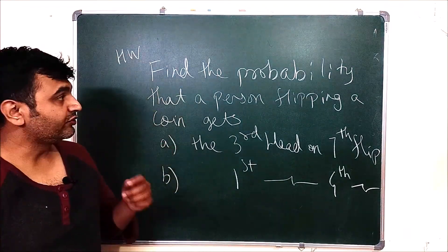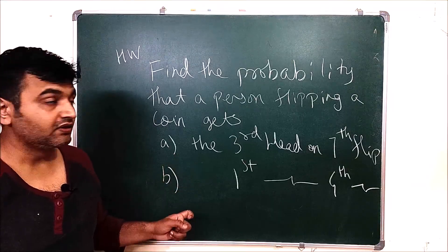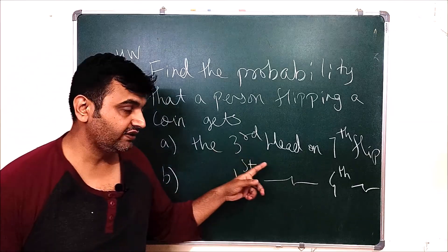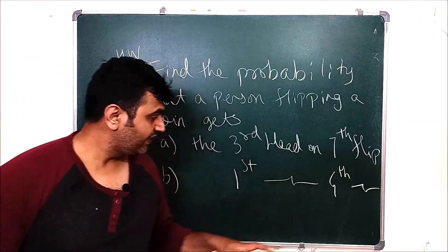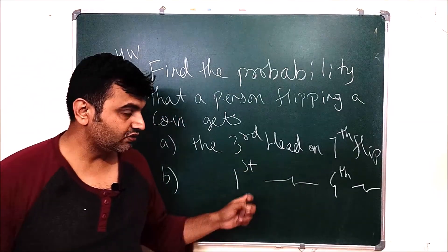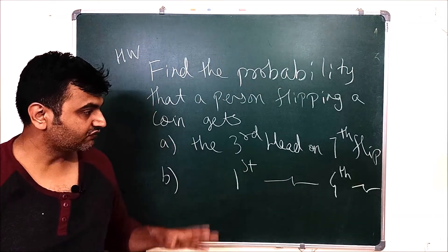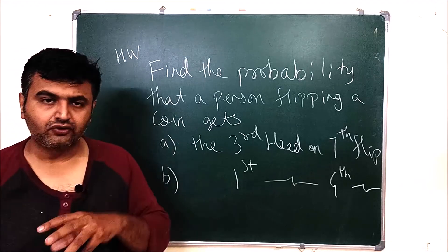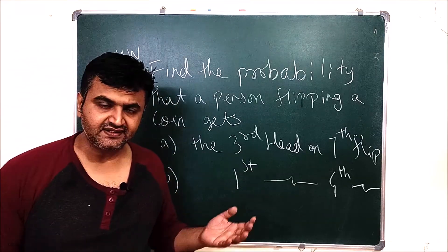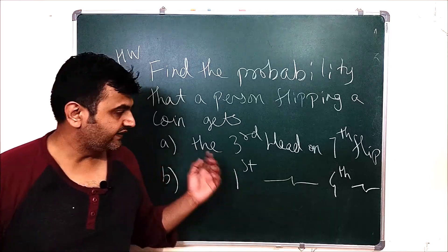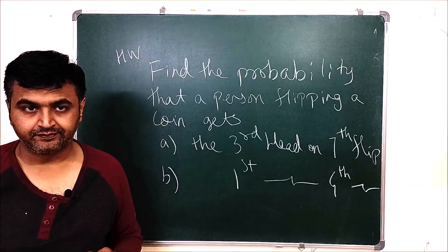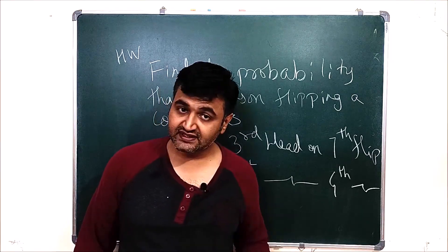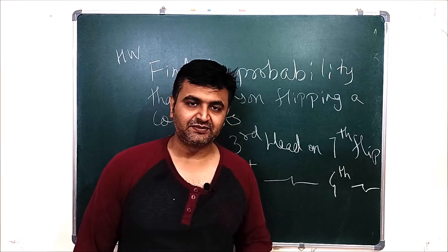Here is a homework problem: find the probability that a person flipping a coin gets the third head on the seventh flip, and the probability of getting the first head on the fourth flip. Always first define your X and what counts as success, then write down the probability of success and failure, and apply the formula. I hope this concept is clear — if you have any doubts, ask in the comment section. Don't forget to like, share, and subscribe. Thank you.